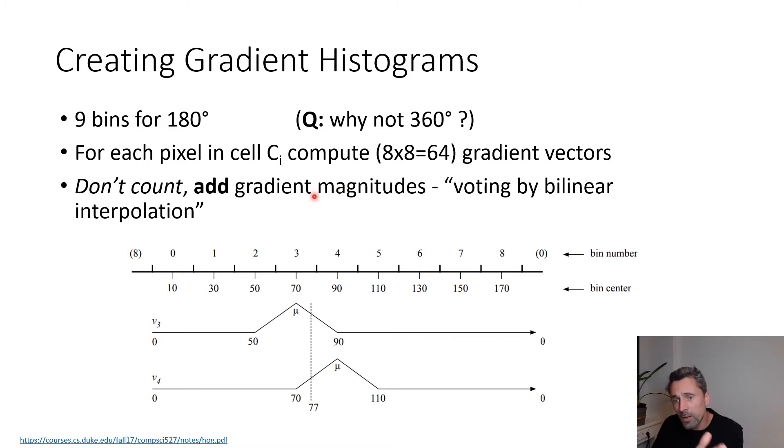We'll use something that the paper calls voting by bilinear interpolation. One gradient vector, for example with an orientation of 77 degrees, obviously doesn't exactly fall on the 70 degrees bin and is even further away from the 90 degrees bin. We could count it into bin number three, but what we'll do is add a little bit of the gradient magnitude into this bin and a little bit into bin number four. That's exactly how the paper does it. My question is: how would you do it? Would you do 50/50, or how would you weigh this sharing of gradient magnitudes between those two bins?